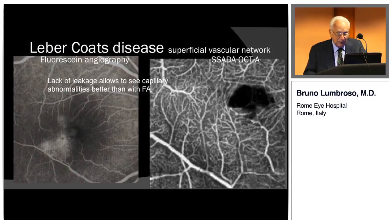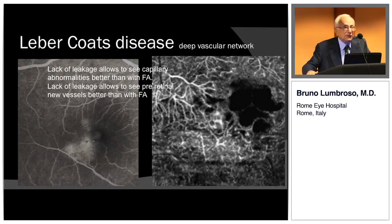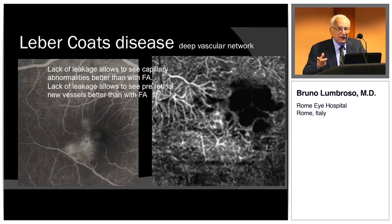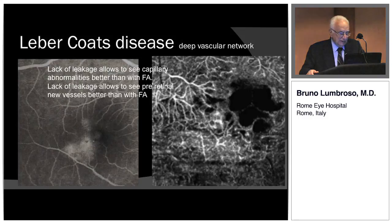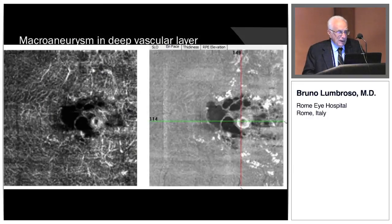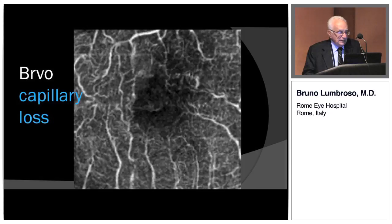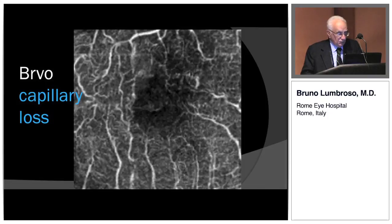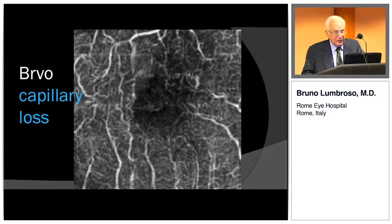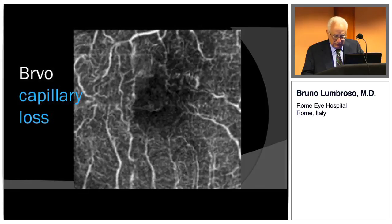Going deeper, the aspect is very different. We must study each disease in both the superficial and deep network, as observations differ and give us much more information. On the left, fluorescein angiography does not reveal much. This is a macroaneurysm, and this is a branch central vein occlusion — where there is occlusion, you see capillary loss and irregularities of the capillaries.